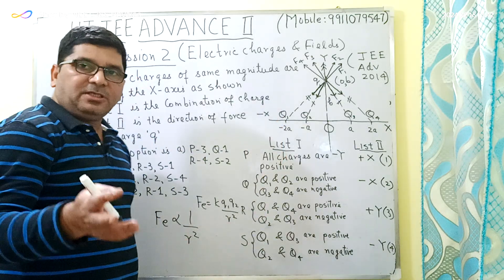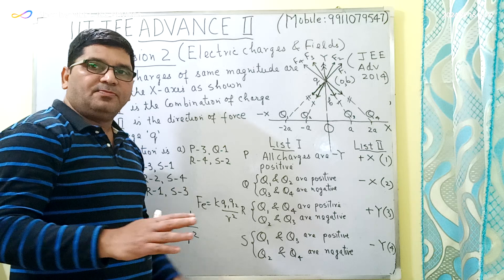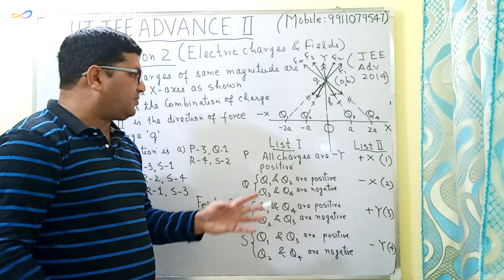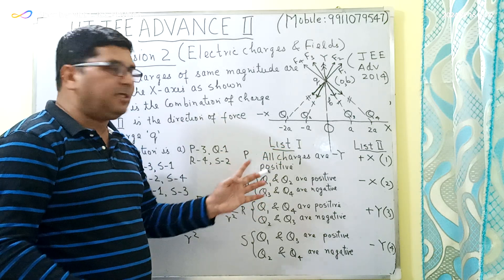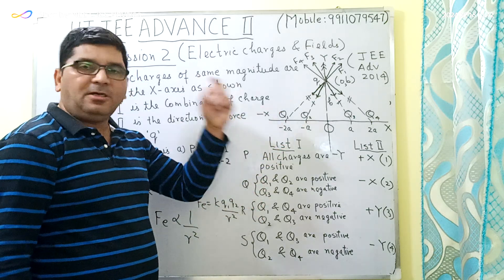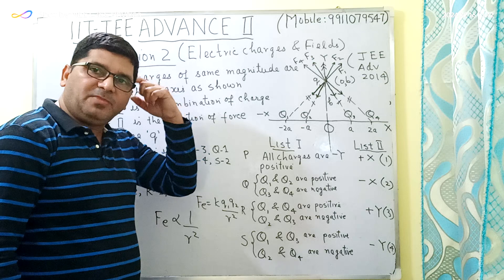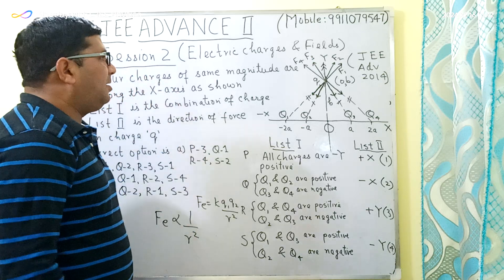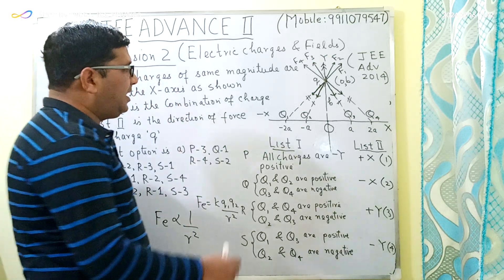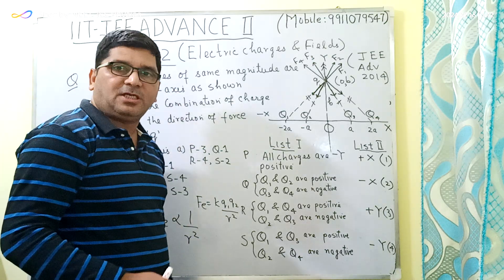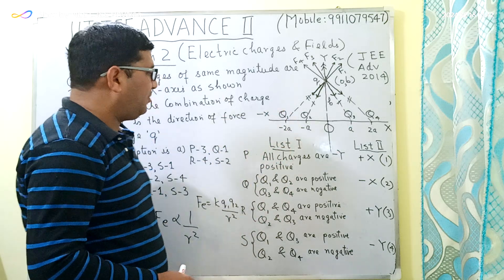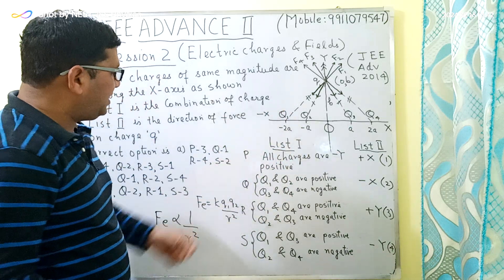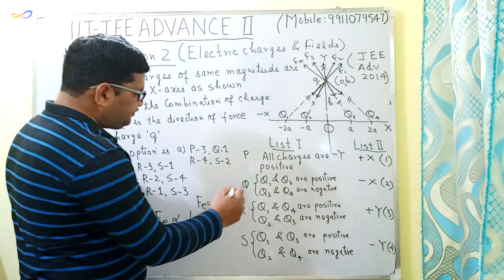The direction of the force depends on the combination of charges. If both charges are like, the force will be repulsive; if both are unlike, the force will be attractive. Now let us take the first case.